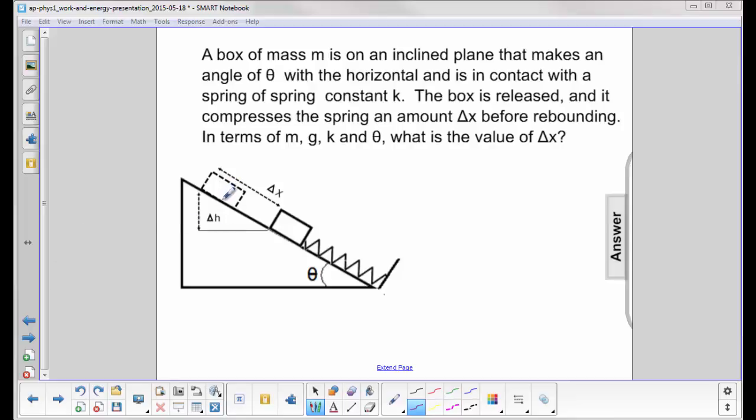So the box is up here. It is then released and it compresses this spring an amount delta X, slides down delta X so the spring is also compressed delta X, and then it rebounds.